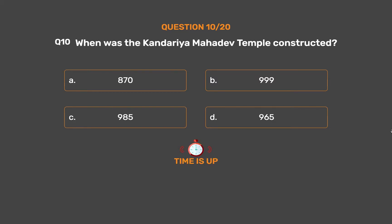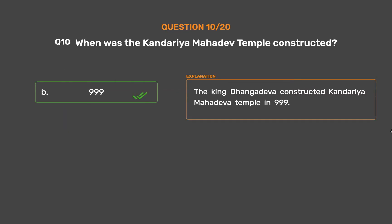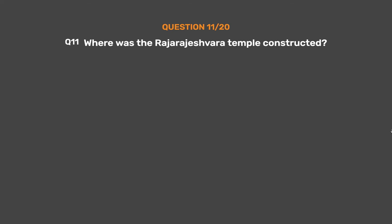The correct answer is Option B: 999. King Dhangadeva constructed the Kandariya Mahadeva temple in 999.